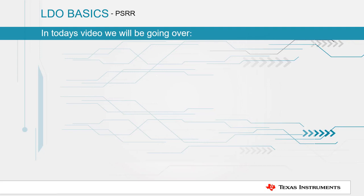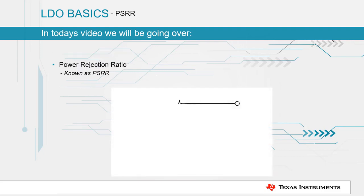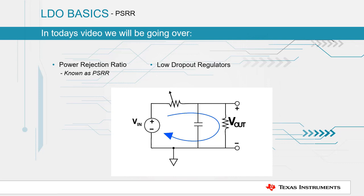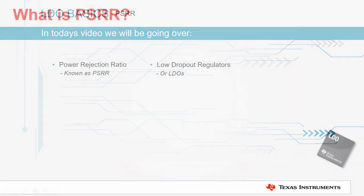In today's video we will be going over power supply rejection ratio, also known as PSRR, and why the ability to attenuate voltage ripple generated by switch mode power supplies is one of the most touted benefits of low dropout regulators, or LDOs. Let's begin.